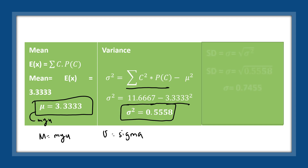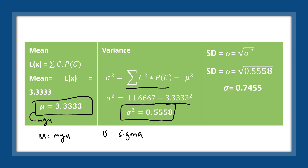To find the standard deviation, take the square root of your variance. The variance is 0.5558, so taking the square root of 0.5558, the answer is 0.7455. Therefore, sigma (σ), or your standard deviation, is equal to 0.7455.